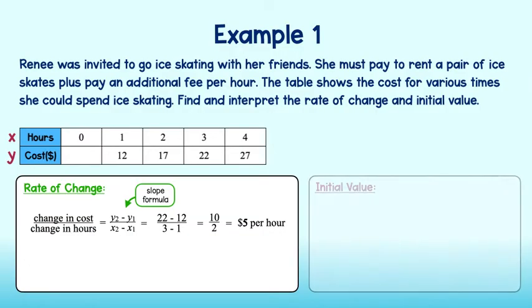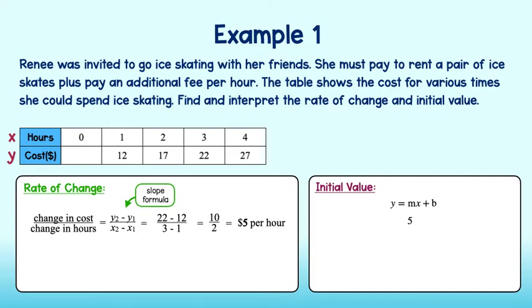To find the initial value, we must figure out the amount Renee will pay right from the start. We can use the equation of a line we've been working on to help. We know the rate of change, or m, is equal to 5. b, or the initial value in this case, is what we're trying to find, so we will leave it as the variable b. Now, for x and y, we can choose any pair of values from the table above. I'll choose 1 and 12. Plug in 1 for x and 12 for y.